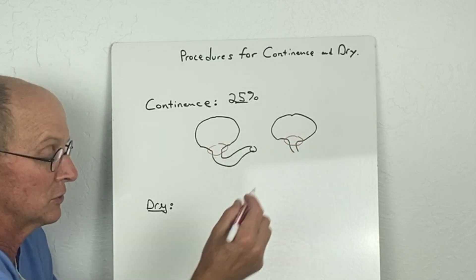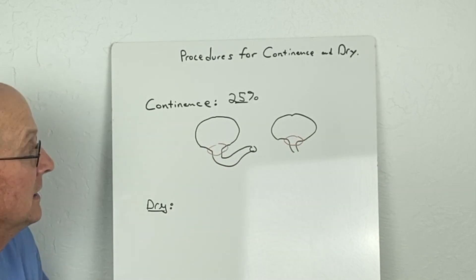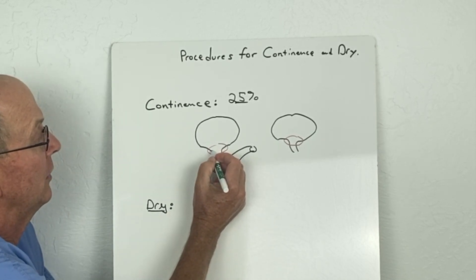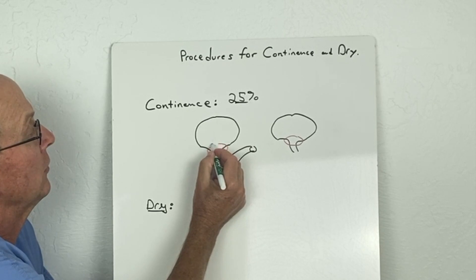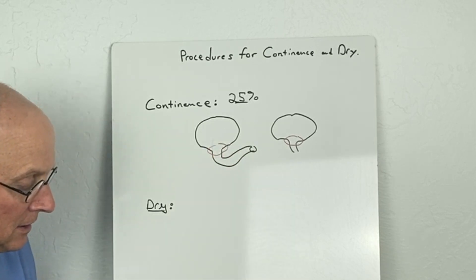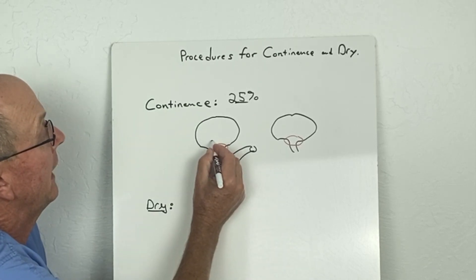This region right in here is where we're going to need to create continence. Usually what needs to be done is some kind of tightening of this area, which involves a procedure called a Young-Dees-Leadbetter bladder neck repair.